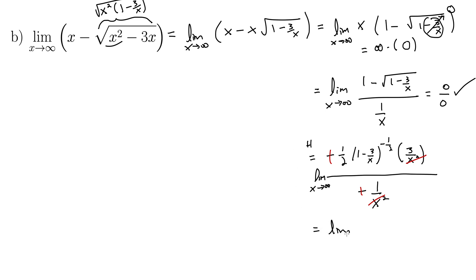So look at what we have now. We have the limit as x goes to infinity of 3 halves times 1 over rad 1 minus 3 over x. And now we can let this x run out to infinity. This just gives us 0 right here. So this whole thing becomes 3 halves.